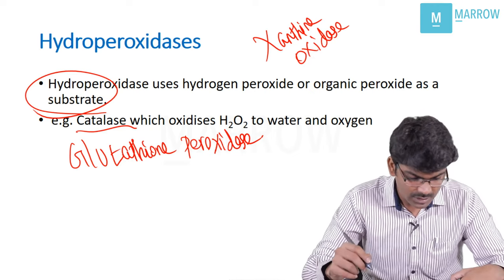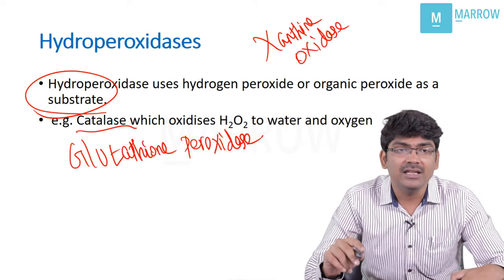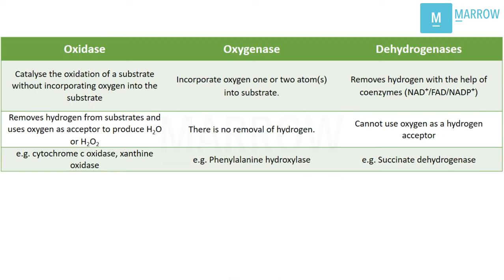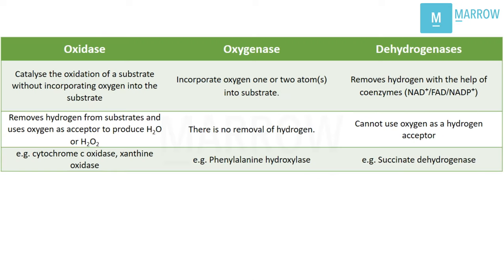Now let us differentiate the other three classes: oxidase, oxygenase, and dehydrogenase. Let us begin with dehydrogenation. Dehydrogenation is the process of removal of hydrogen, and dehydrogenases are the enzymes involved in this. When there is removal of hydrogen, there should be someone to accept that. The acceptors are NAD⁺, FAD, and NADP⁺ — these are the coenzymes in your enzymatic reactions.